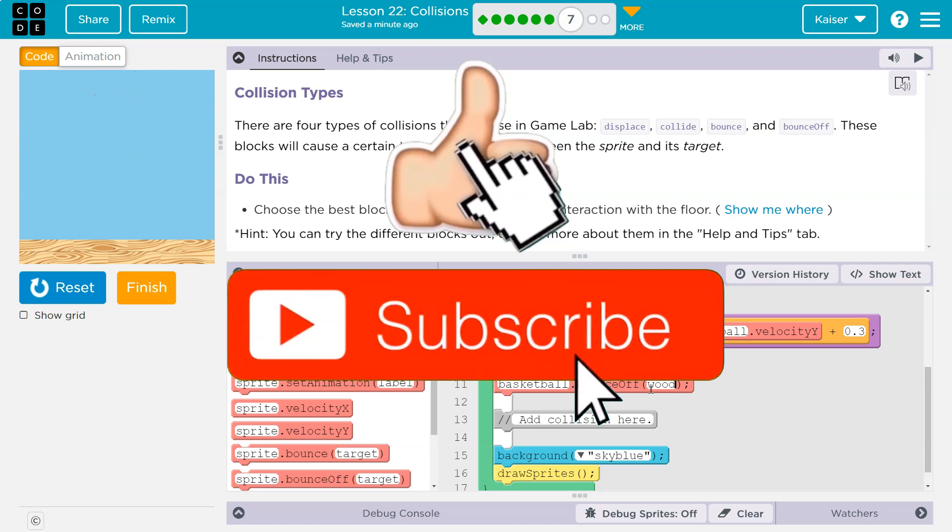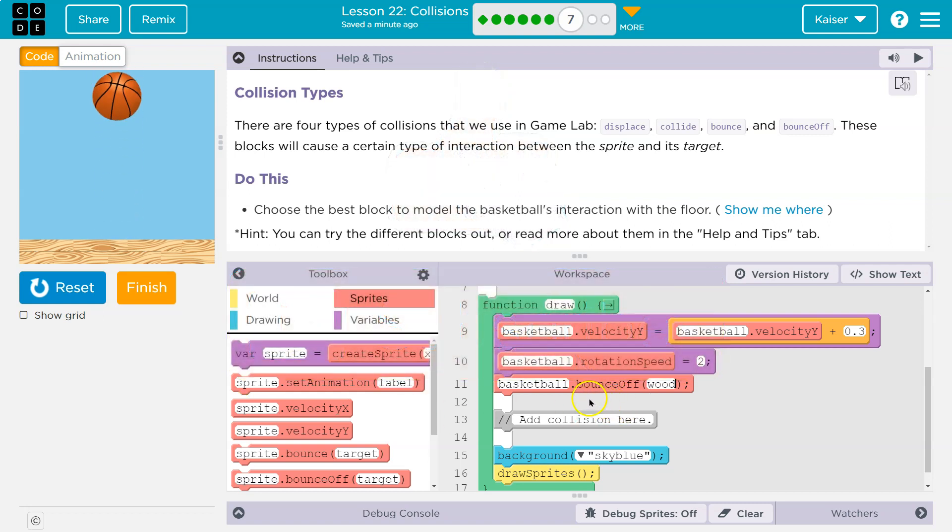Pretty cool. We're going to be able to make a lot of neat interactions and games with the blocks we're learning about. Keep in mind there's a conditional in there—an if statement in these blocks, which is if the basketball is touching the wood then bounce off. It's like a shortcut in code.